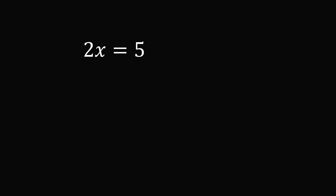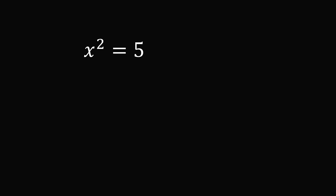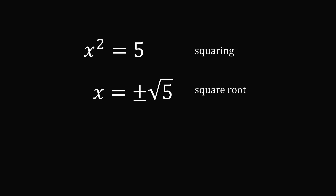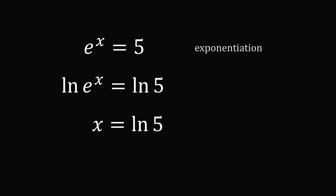If we have 2 multiplied by x equals 5, we undo the multiplication by dividing both sides by 2, giving x equals 5 over 2, which is 2.5. If we have x squared equals 5, we undo the squaring by taking the positive and negative square roots, so x equals plus or minus the square root of 5. If the equation is e to the power of x equals 5, we take the natural logarithm of both sides, giving x equals the natural logarithm of 5.